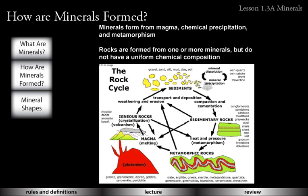We still haven't talked about how minerals form. They form from several different processes: from magma; from chemical precipitation, where two fluids with chemicals in them interact, and the elements and compounds form a solid that sinks out of the liquid — like precipitation, but it's forming a solid, not a falling liquid; and from metamorphism, where minerals or rocks that already exist are altered so that new minerals come out of them. Minerals are the building blocks of rocks — rocks are formed from one or more minerals.